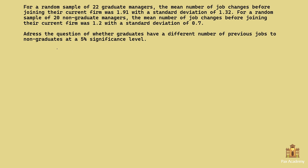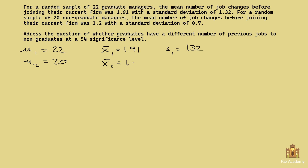The first thing to do, like any hypothesis testing problem, is to write down the information we can gather from the question. The first sample size n1 is 22, the first mean x-bar 1 is 1.91, and the first standard deviation S1 is 1.32. The second sample size n2 is 20, the second mean is 1.2, and the second standard deviation is 0.7.